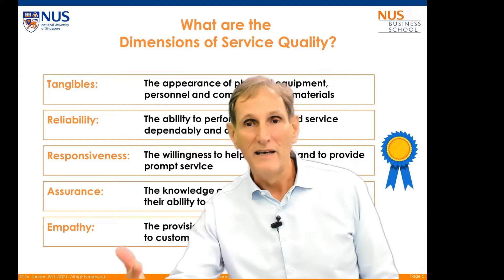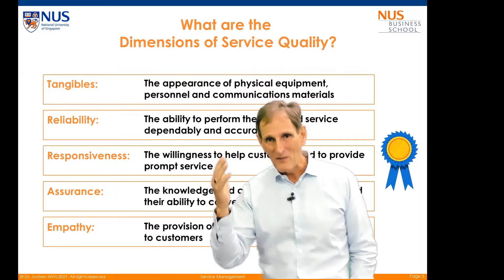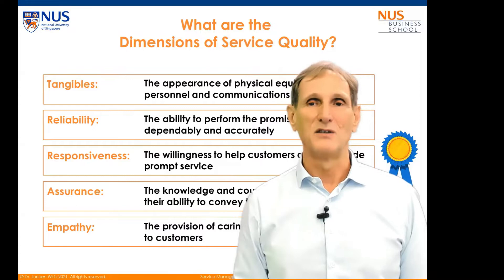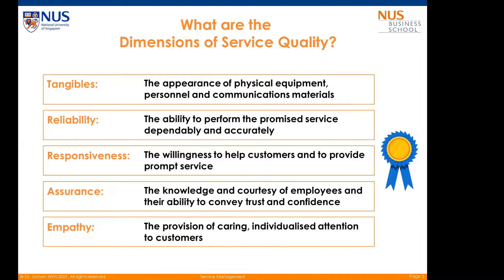Now that we know what quality is, we can ask: what are the dimensions of service quality? There are five dimensions that are quite generic and apply to any service. They are: tangibles — anything you see, all the touch points and tangible cues; reliability — do you deliver as promised; responsiveness — are you willing to help customers, especially when things go wrong; assurance — do I trust that you are an expert; and finally, empathy — caring, individualized service.